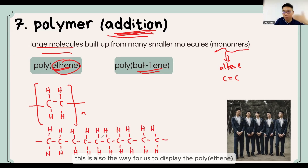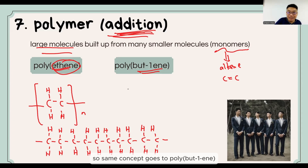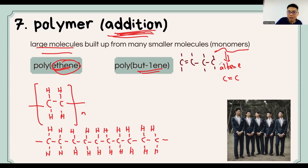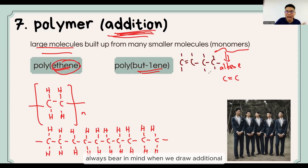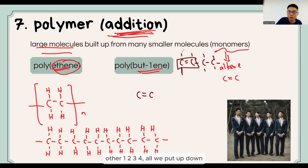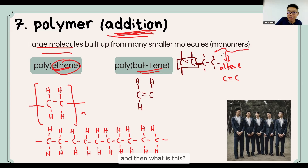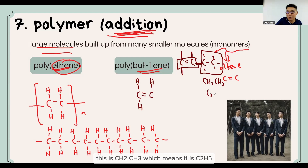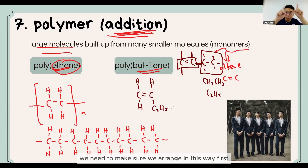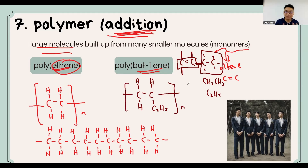When this unit attaches to many, many ethene molecules, it forms poly(ethene). We can also draw it in the standard repeat-unit notation. The same concept applies to poly(but-1-ene). But-1-ene has 4 carbons. When drawing addition polymerization, always put the C=C in the middle; the other carbons and their substituents go up and down — not left and right. The side group here is CH2CH3, which is C2H5. Arrange it this way first, then remove the double bond and join the units together.